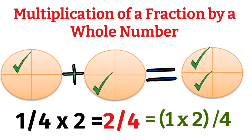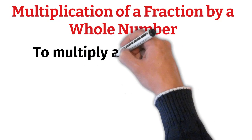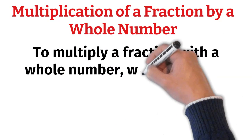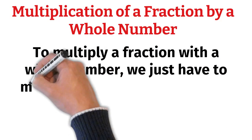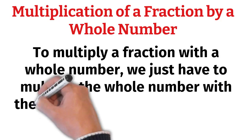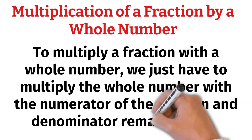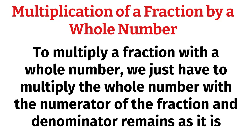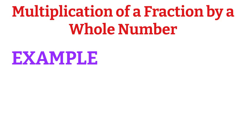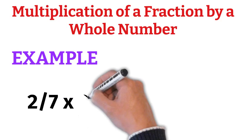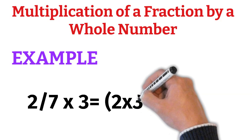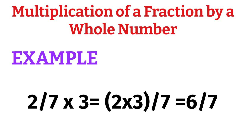So now we can say: to multiply a fraction with a whole number, we just have to multiply the whole number with the numerator of the fraction, and the denominator remains as it is. For example, 2/7 × 3 = (2 × 3)/7 = 6/7.